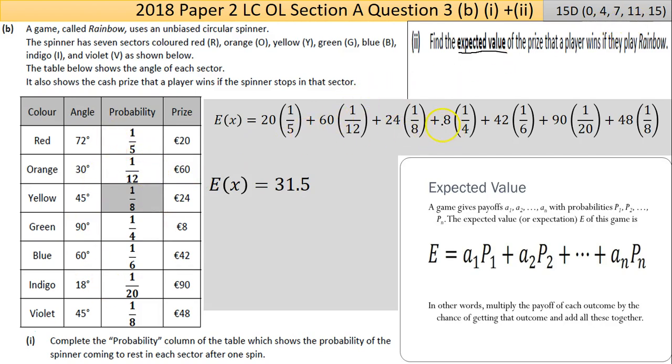So in one sense, it's not that big a deal, although we always like to pick up every mark we can. The expected value can be found by multiplying the probability—so 1/5 by the price, plus 1/12 by its price, plus 1/8 by its price. There's a fairly chunky calculation there. Calculator will do it for you. And it'll bring you straight to the answer of 31.5. That's that.